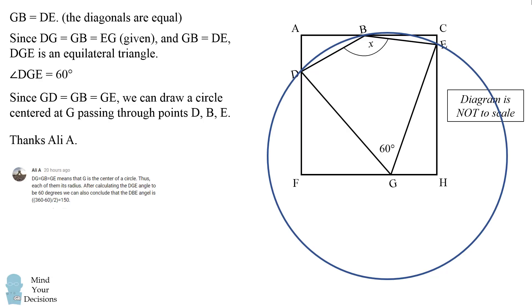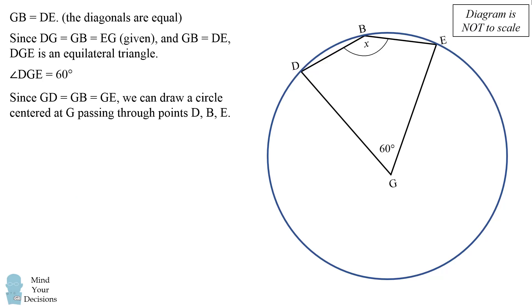Now that we have a circle and we have a central angle, we don't actually even need the square to solve for angle X. Let's clean up our diagram a bit.